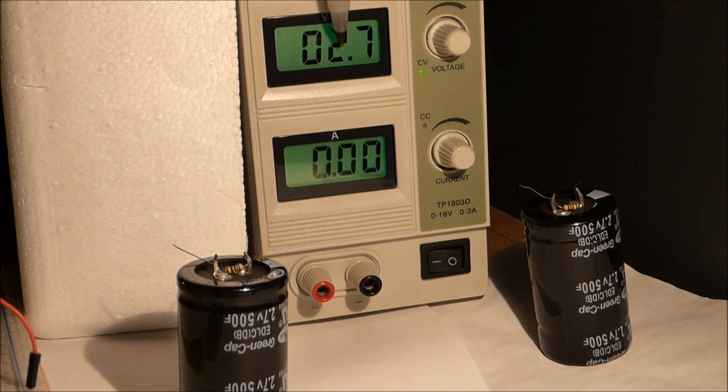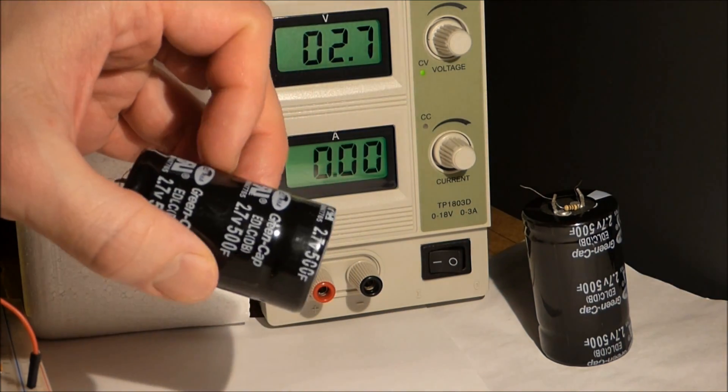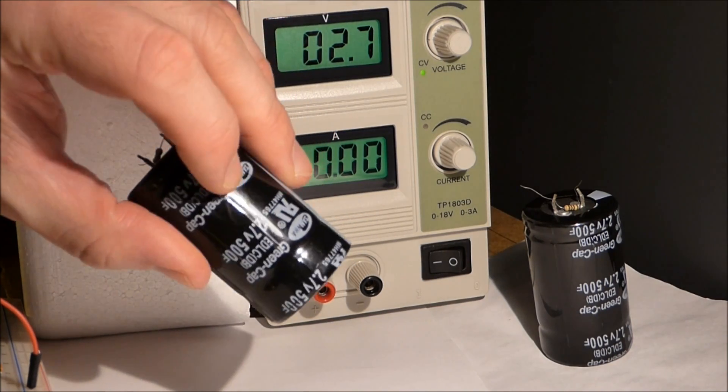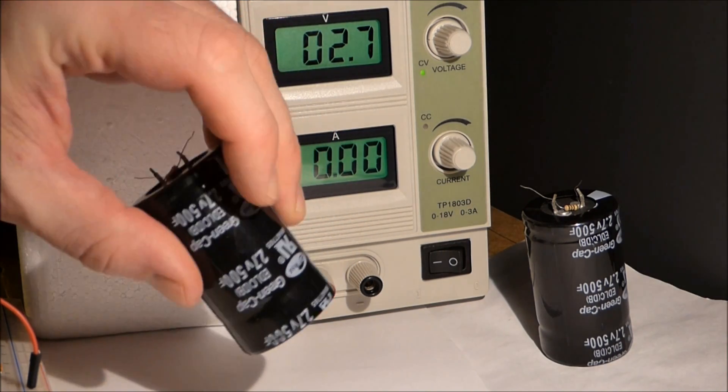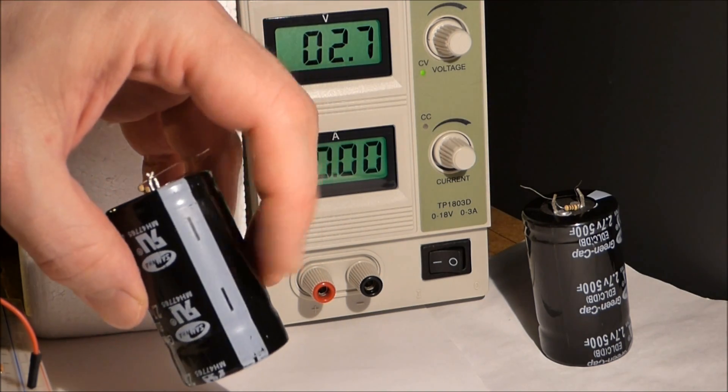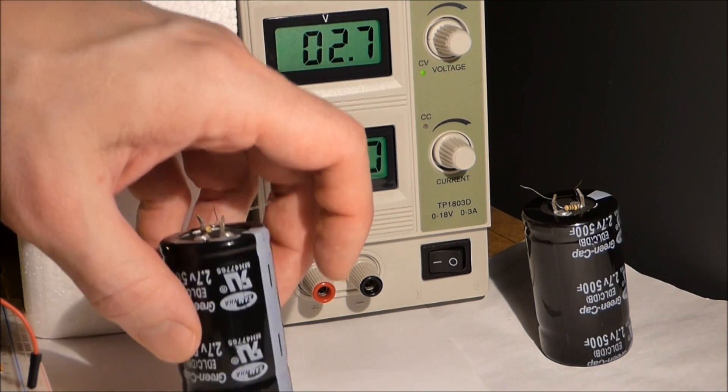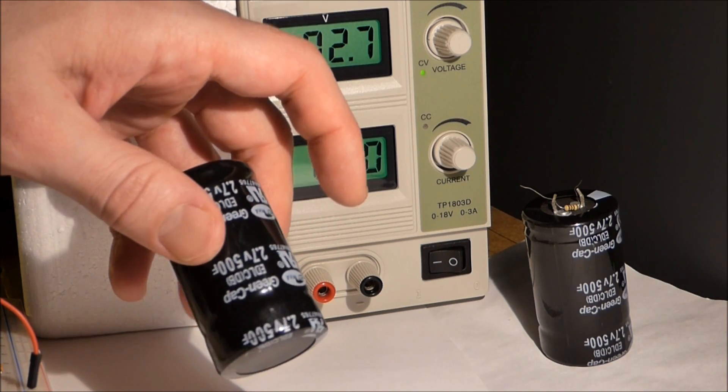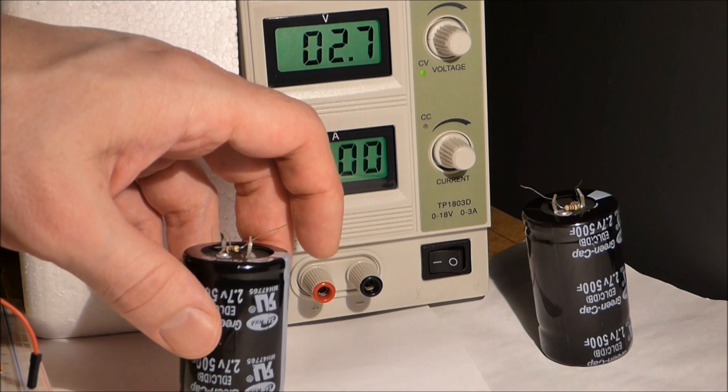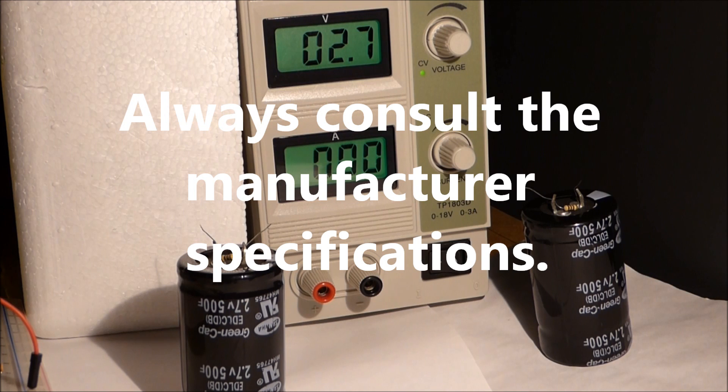I have set this power supply to 2.7 volts. That is the maximum amount of voltage these super capacitors are rated for. The numbers are right there, and it also says 500 Farad. You don't want to give this more than a 2.7 volt charge, and you want to give the black lead, the negative side, to the negative side of the capacitor. Those are the two main things you have to worry about with the capacitor.